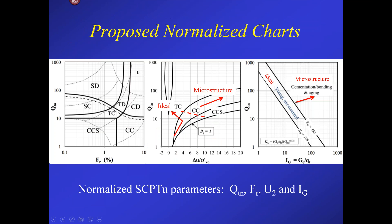Here's the proposed family of three charts. The normalized parameters are normalized cone resistance, normalized friction ratio, normalized pore pressure, and this normalized rigidity index g over q-net. Ideally, you go to the shear wave velocity chart first — the normalized small strain rigidity index — to see if your data falls within the ideal region. If it does, the main chart of normalized tip resistance and friction ratio is probably going to work well and the dilatancy-contractive boundary will apply. If the soils show significant microstructure, some local adjustment to the chart may be needed. The pore pressure chart helps identify the difference between ideal unstructured and structured soils for fine-grained soils.